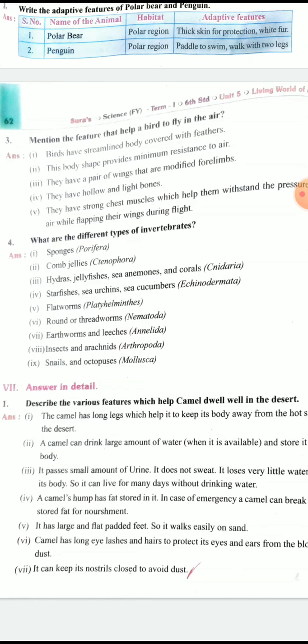Fourth question: What are the different types of invertebrates? Sponges, calm jellies, hydras, jellyfish, sea anemones and corals, starfishes, sea urchins, sea cucumbers, flatworms, roundworms, earthworms and leeches, insects and arachnids, snails and octopus. These are the different types of invertebrates. Are you understood children?